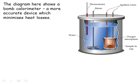More accurate calorimetry can be done using a sealed calorimeter called a bomb calorimeter, where the sample is burnt in an oxygen atmosphere to help complete combustion, and the reaction is completely surrounded by the water being heated up, so that all of the heat energy produced has to be transferred to the water. This gives a much more accurate set of results.